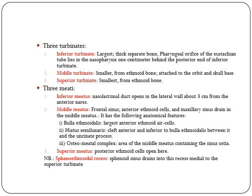The middle turbinate is smaller and forms part of the ethmoidal bone and is attached to the orbit and skull base. The superior turbinate is the smallest and is a part of the ethmoidal bone. The inferior meatus is where the nasolacrimal duct opens in the lateral nasal wall, about 3 cm from the anterior nares.